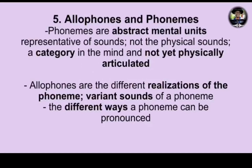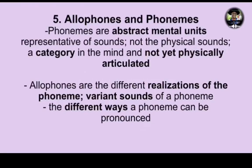We'll then move to allophones and phonemes. Phonemes are abstract mental units representative of sounds — they are not physical sounds but a category in the mind that has not yet been physically articulated. Allophones, on the other hand, are the different realizations of the phoneme — the variant sounds, or the different ways a phoneme can be pronounced. We'll itemize their differences so we can easily recognize them.